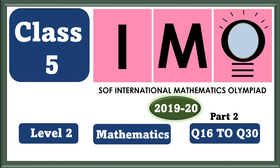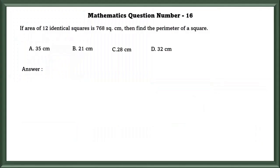Classify IMO level 2, Mathematics question number 16. If the area of 12 identical squares is 768 square centimeters, then find the perimeter of a square.